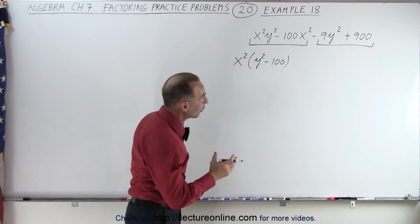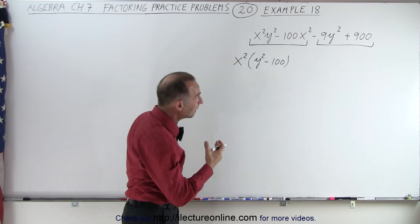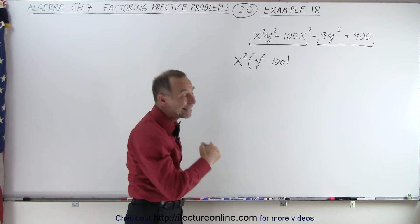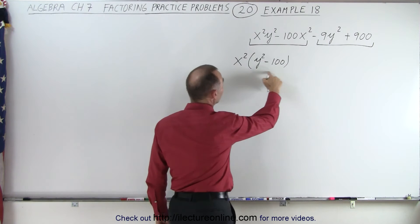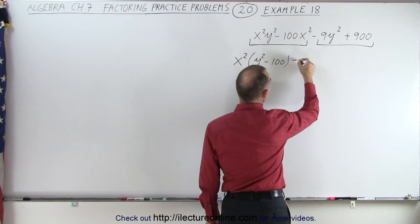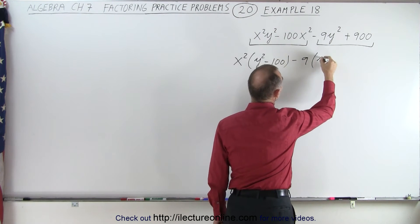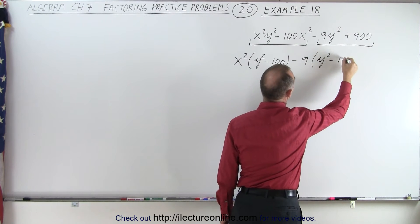Now you take the next two and notice you can factor out a 9, but in this case perhaps a negative 9 because then we may end up with something that looks like this. So let's take out a negative 9, which leaves us with a y squared minus 100.